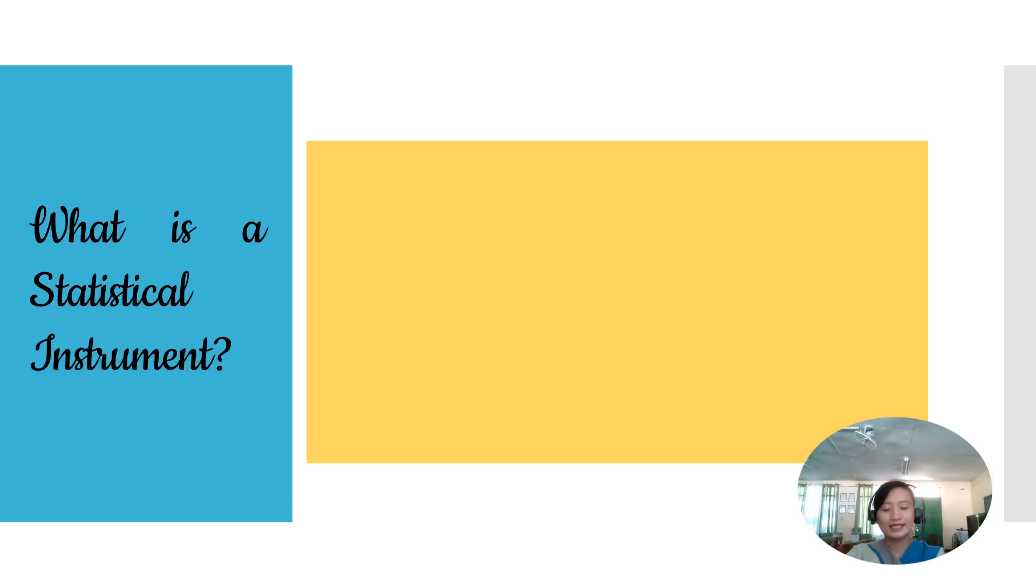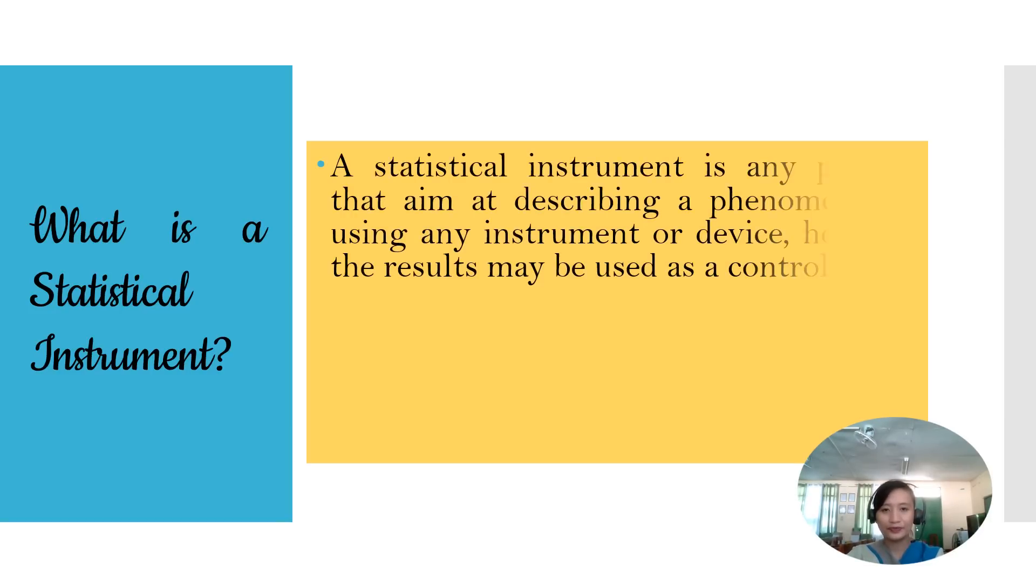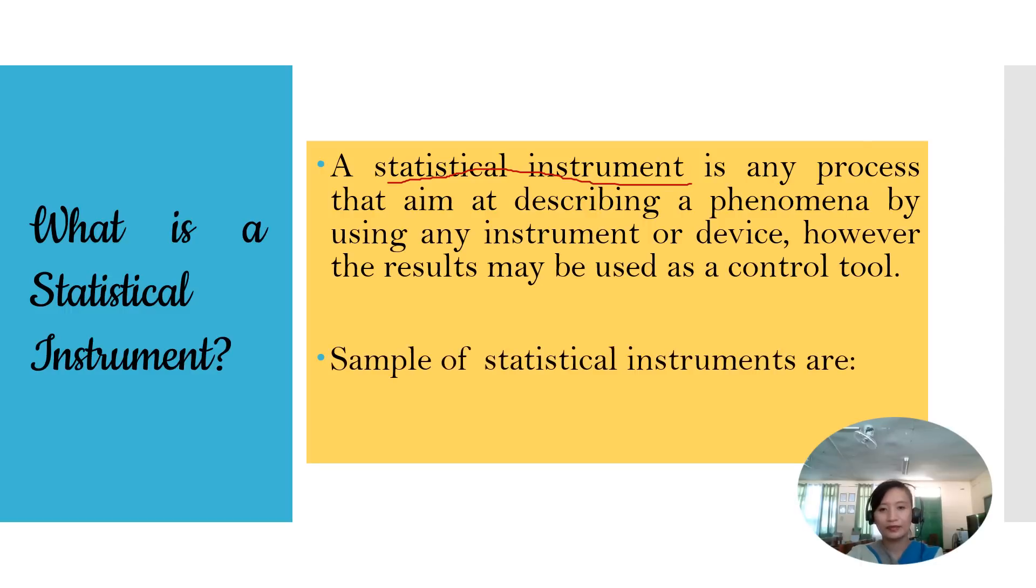First, let us define what is a statistical instrument. A statistical instrument is any process that aims at describing a phenomenon by using any instrument or device. However, the result may be used as a control tool. That is the definition of statistical instrument. And there are some examples of statistical instruments such as survey and questionnaire. Let's go over them one by one.